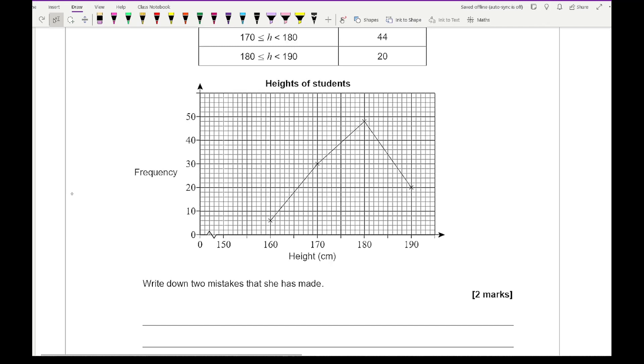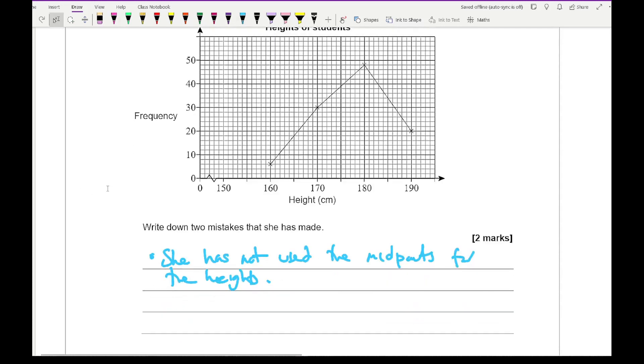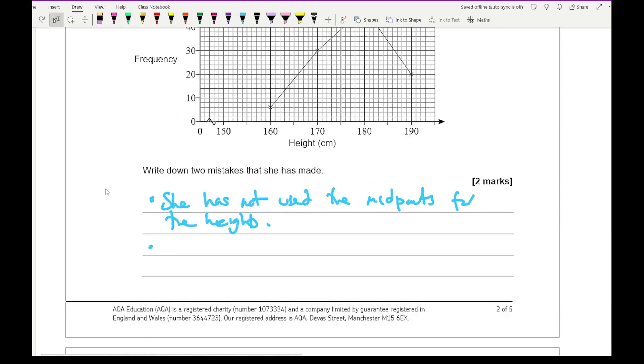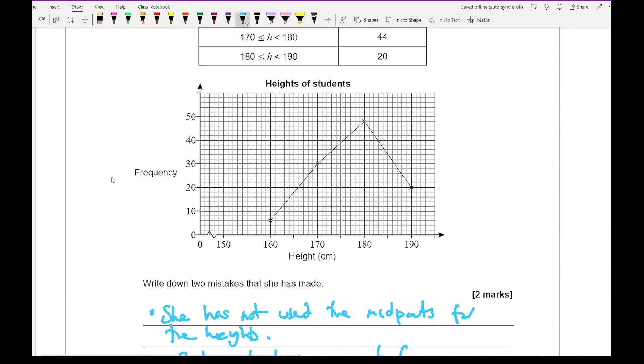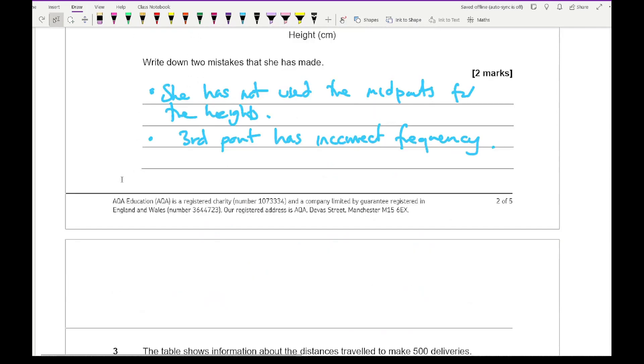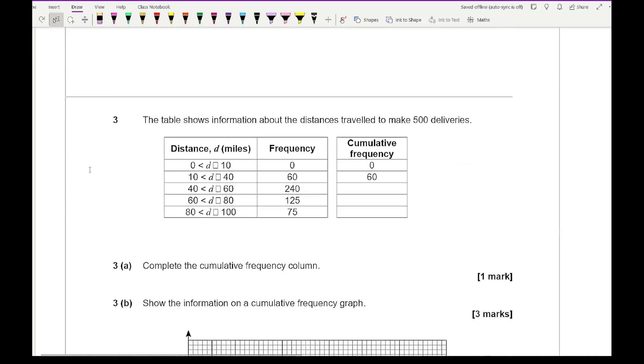The next question asks us to write down two mistakes that Jess made when drawing her frequency polygon. The two mistakes she made are that she has not used the midpoints or the heights, because when you've got grouped data you're assuming that all the data in that group satisfies the midpoint. The second mistake is that the third point is incorrect, so the frequency was plotted incorrectly.